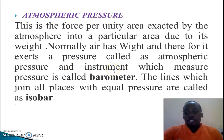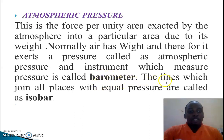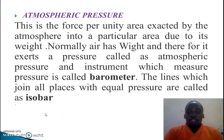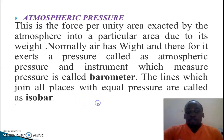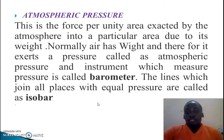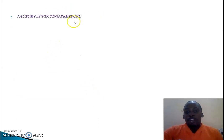The instrument used to measure pressure is called a barometer — a specific scientific instrument used to measure pressure. The lines which join all places with equal pressure are known as isobars. These are important when studying statistics and maps.